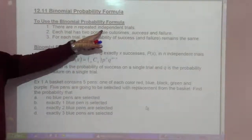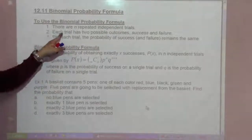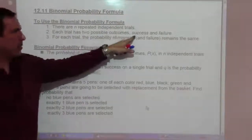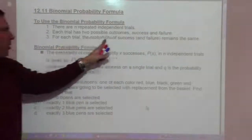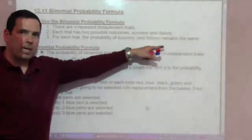To use the Binomial Probability Formula: 1. There are n repeated independent trials. 2. Each trial has two possible outcomes, success or failure. We need to find the probability of each of these. For each trial, the probability of success and failure remains the same.